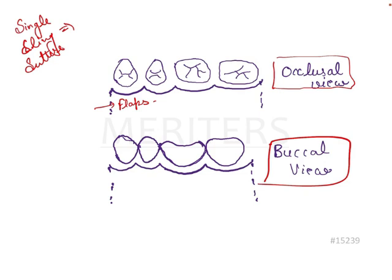This technique is generally used for securing flaps when you want the flaps to be positioned in the coronal direction. Basically, this gives tension in the coronal direction so that the flap can be secured coronally. If you want to coronally displace a flap, you can use this particular technique.